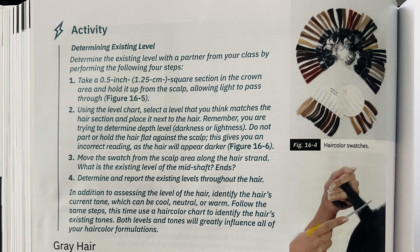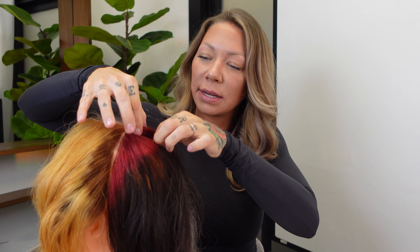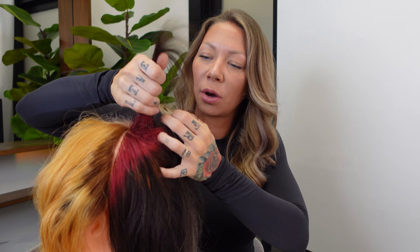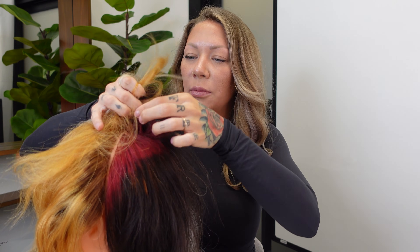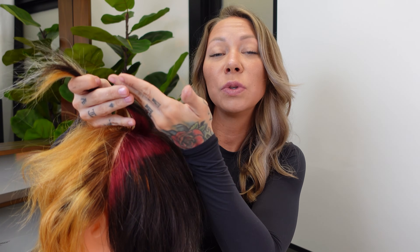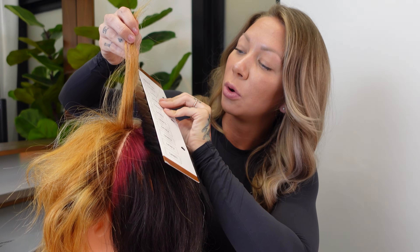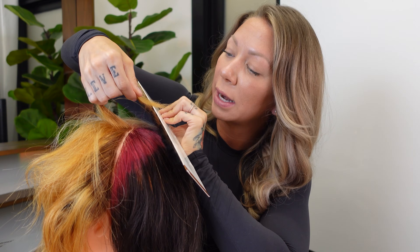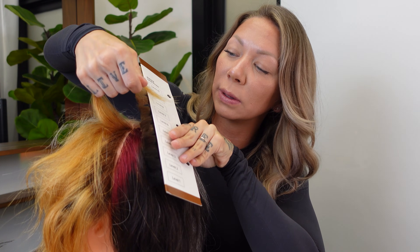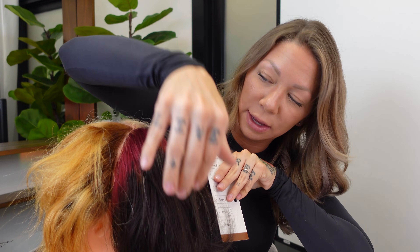On page 616, there's an activity. It says to take a half-inch square section at the crown of the head and hold it up from the scalp so light can pass through it. Using the N series of the color chart or a level finder, go through and find what level the hair is — fan it out and try to match. Remember, you're looking at lightness or darkness only, no tone. You can do it on the back of the head or the ends. Practice on as many people as you can to get really good at knowing the level just by looking.